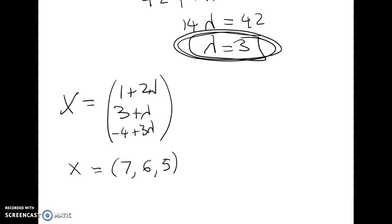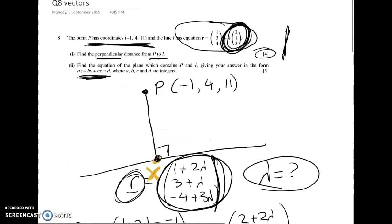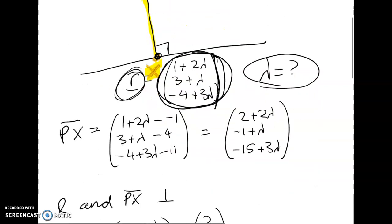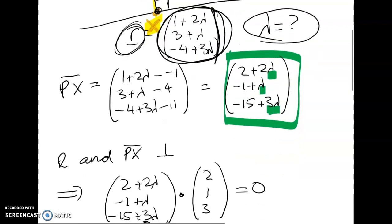But as Ben pointed out in class today, there's a much faster way to do this, because what I've been asked to find is the perpendicular distance from P to L. So I very stupidly went and found this point and that point and did Pythagoras on the distance. But actually we've got an expression for exactly what we want, which is the vector PX, and it's this thing here. So the more efficient way to do this question is just to take our lambda value and sub it in here, and then find the length of this vector. It's the same as doing it using the two points, it's just a little bit faster.